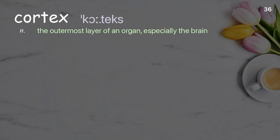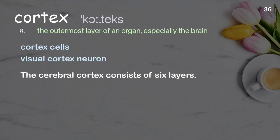Cortex: the outermost layer of an organ, especially the brain. Examples: cortex cells; visual cortex neuron. The cerebral cortex consists of six layers.